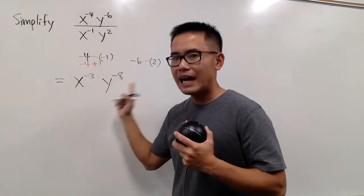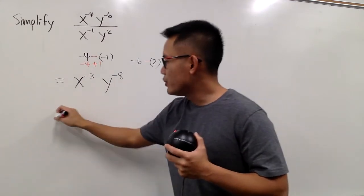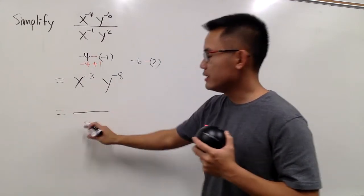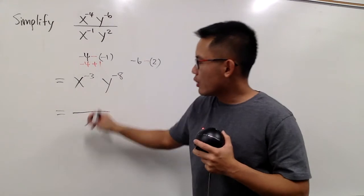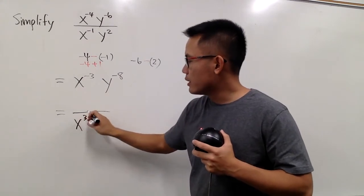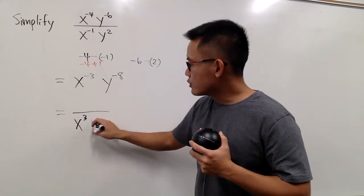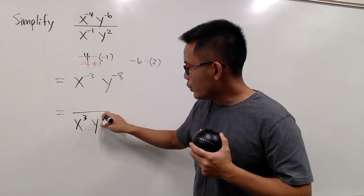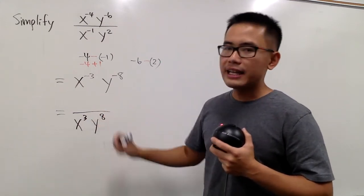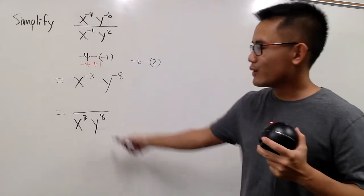Now, both of them have negative exponents. Be sure you bring them down to the denominator. So we will have x to the third power with positive exponents. And then we will also bring y, and we will have positive 8 exponents. And now the question is, what's on the top?